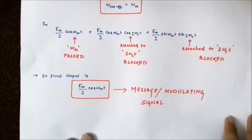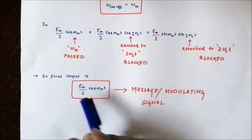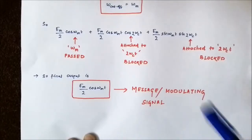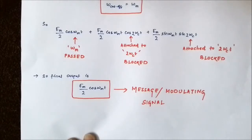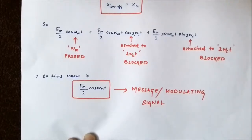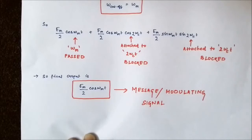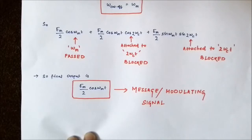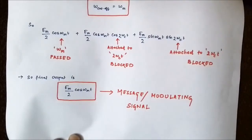The final output of the low pass filter is Em/2·cos(ωm·t), which is the required message or modulating signal. This is the basic concept of demodulation — extraction of the message signal from a single sideband suppressed carrier signal using the synchronous or coherent detection method. I hope you liked this video. Please subscribe to Engineering Tutorial for more videos related to electrical, electronics, communication, and instrumentation engineering. Thank you very much.